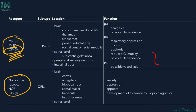The mu receptor (opioid 3) is the most important receptor for pain management, with subtypes mu1, mu2, and mu3. Present in the cortex, thalamus, striosomes, periaqueductal gray matter, rostral ventromedial medulla, substantia gelatinosa, peripheral sensory neurons, and intestinal tract. Mu1 causes analgesia and physical dependence — this is responsible for pain management and also for opioid addiction potential. Mu2 causes respiratory depression, miosis, euphoria, reduced GI motility, and physical dependence. Constipation, the most common opioid side effect, is mediated by mu2 receptors.